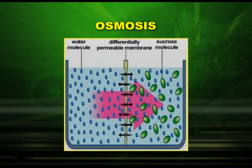This we can demonstrate with a simple diagram. Here we see two systems: one having pure water molecules as the solvent, and the other having a sucrose solution. The two systems are separated by a differentially permeable membrane. There is a net movement of water molecules from the pure solvent to the sucrose solution.